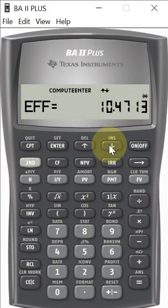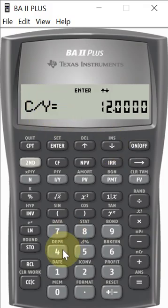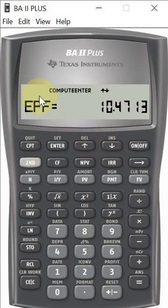Now, let's say we wanted to do quarterly compounding. We would just go to our compounding per year, put in 4 for quarterly, go back to effective, and hit compute. It gives us 10.38 percent.